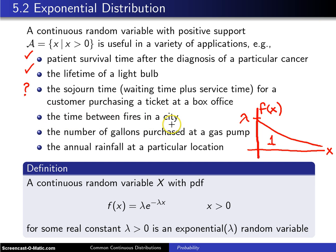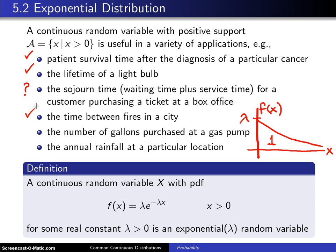Time between fires in a city: if fires are occurring randomly over time, then it would be a Poisson process, and Poisson processes have exponential inter-event times. So this one is certainly a possibility for the exponential distribution.